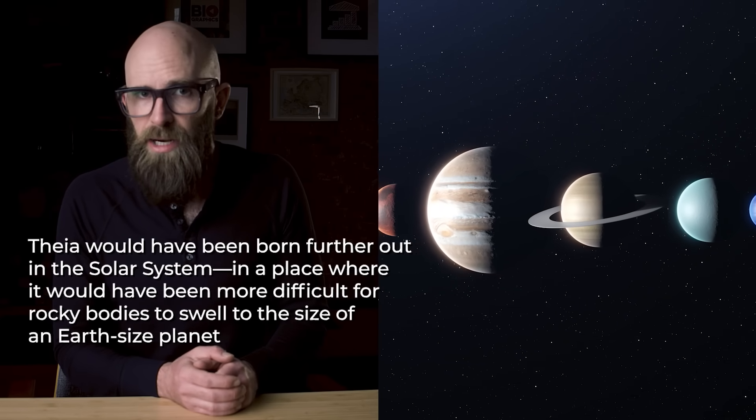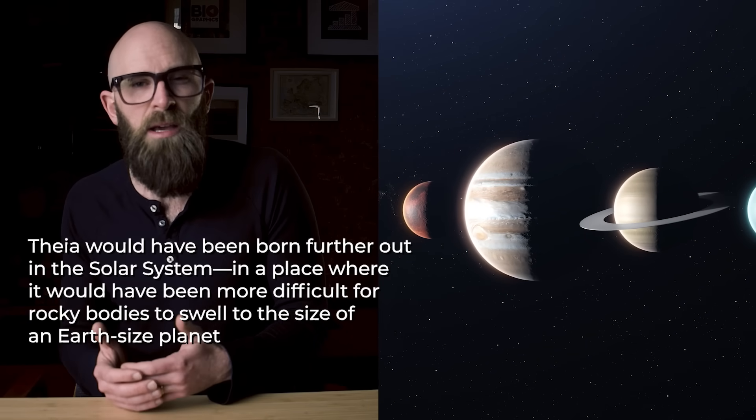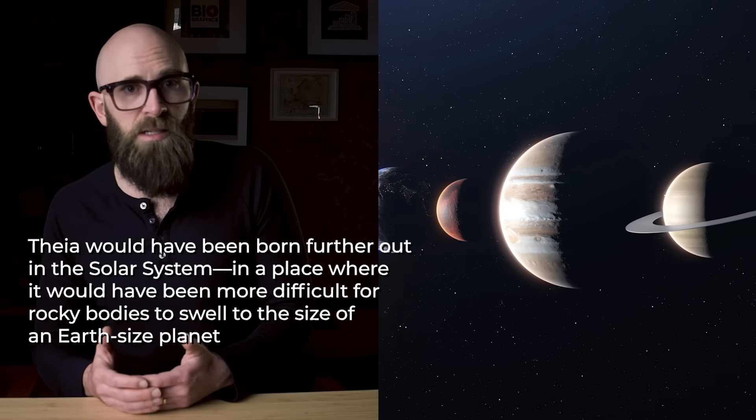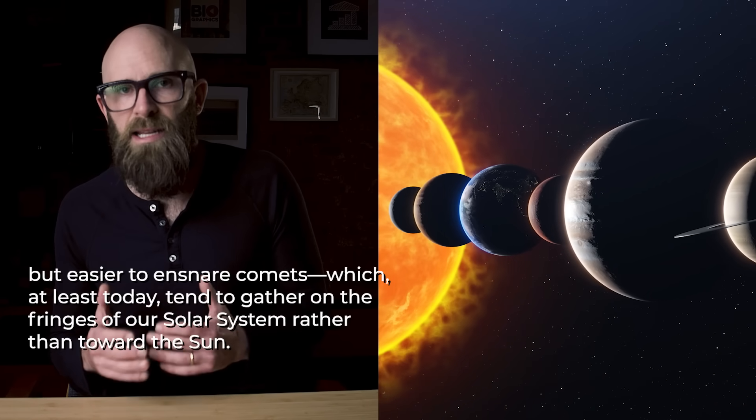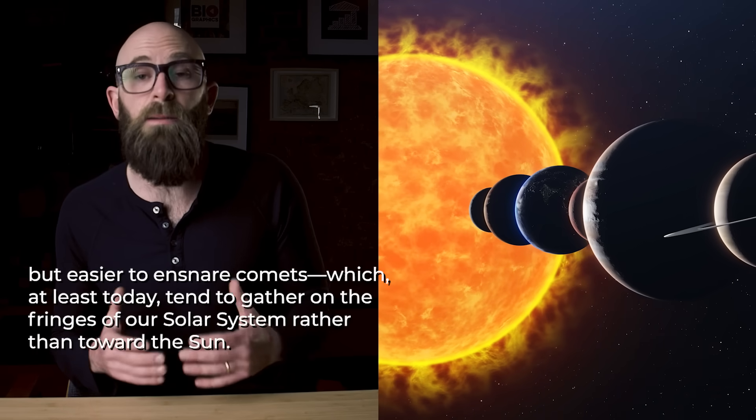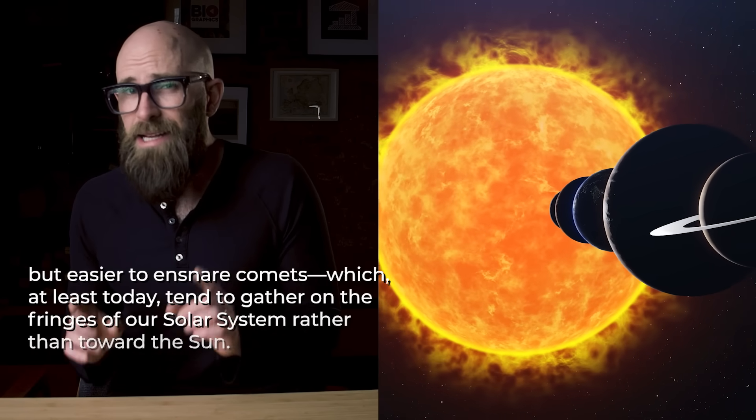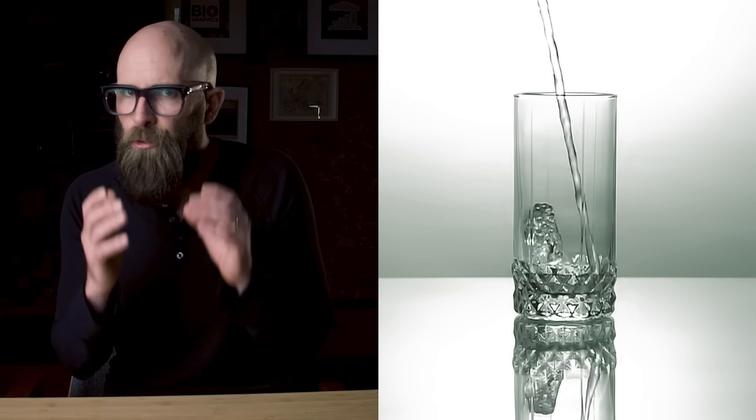Theia may also have been a water world, and in fact, if that's the case, then it may have been where Earth got much of its own water. Some astrophysicists argue that Theia would have been born further out in the solar system, in a place where it would have been more difficult for rocky bodies to swirl to the size of an Earth-sized planet, but easier to ensnare comets, which at least today tend to gather together on the fringes of our solar system rather than toward the sun. If that's the case, then the water you're drinking right now might have come from as far back as four and a half billion years ago.